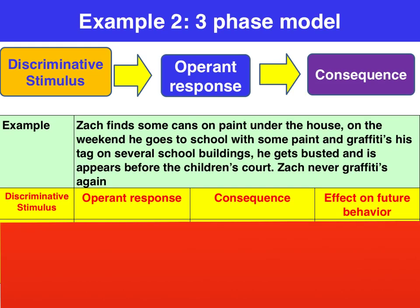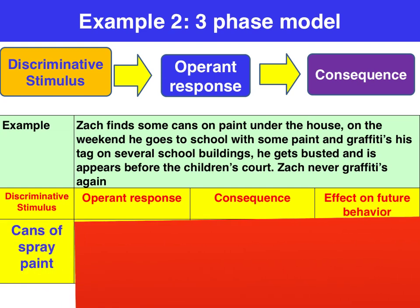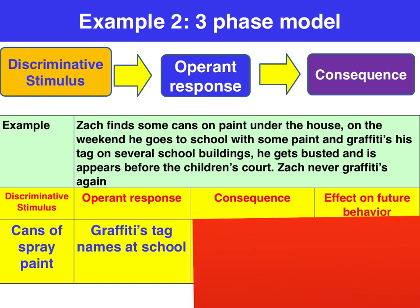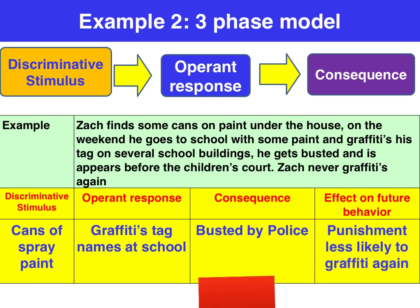Zack finds some cans of paint under the house, and on the weekend he decides to go to school and graffiti his tag on several school buildings. He gets busted and appears before the children's court, and Zack decides to never graffiti again. The discriminative stimulus is finding the cans of spray paint under the house. He had a choice — he could have told Mum and Dad or just left them there — but his choice was to go and graffiti the buildings. The consequence of his operant response was getting busted by the police and going to court. So he's been punished, and when you're punished you're less likely to repeat the behaviour again.